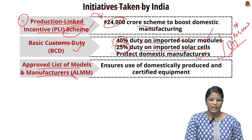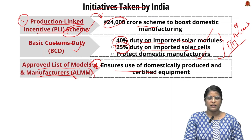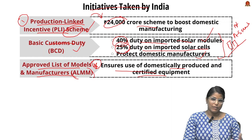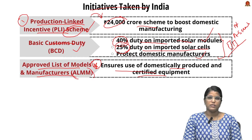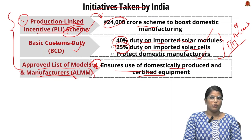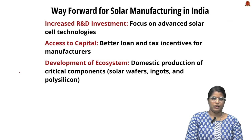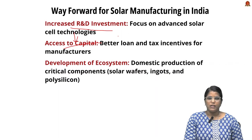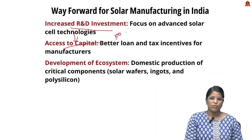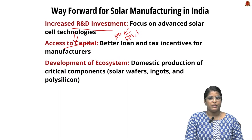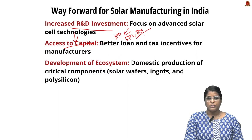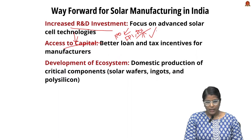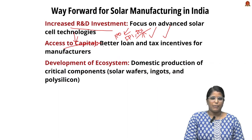Third, there is the Approved List of Models and Manufacturers (ALMM) — the government enlists certain domestic producers and certified equipment, and only these are preferred for government or private projects. For the way forward, we must increase R&D investment, make more capital available — for example, Waaree's IPO will attract foreign portfolio investment and FDI, indirectly contributing to economic growth and greener energy generation.